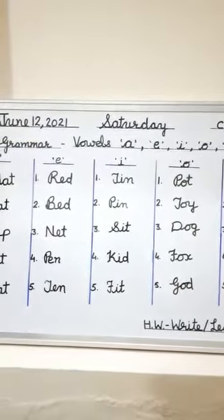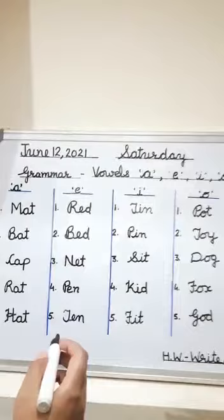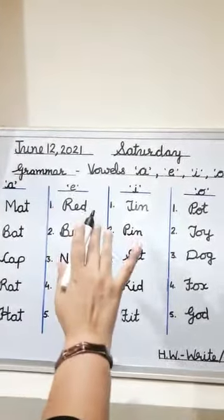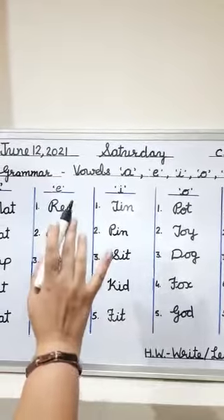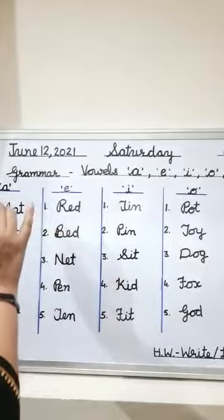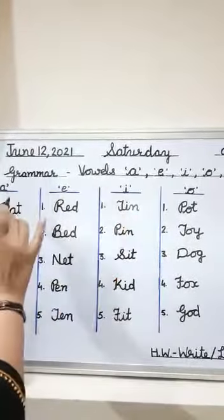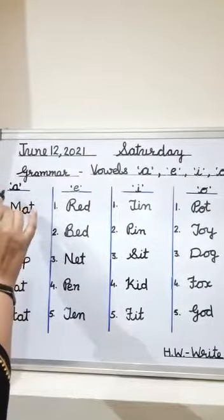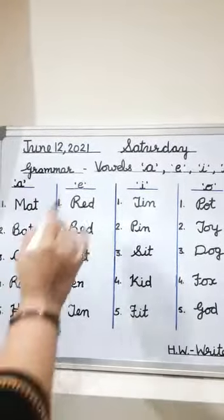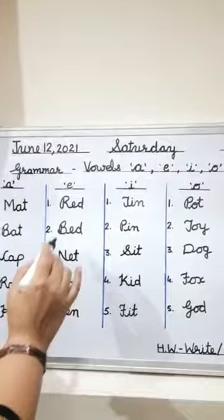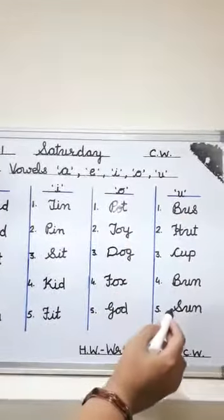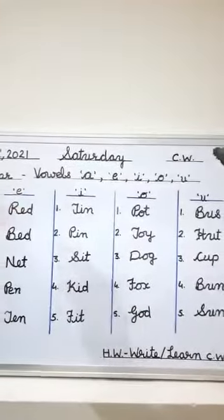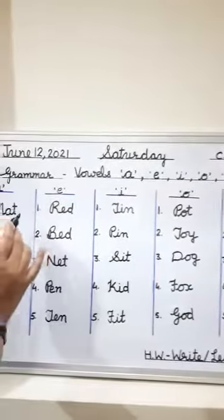While others are consonants, I have written some words containing vowel sounds. ये सभी जो हैं sound words हैं. A sound words हैं, E sound words हैं, I sound words हैं, O sound words हैं, U sound words हैं. इन words में vowel की sound है.